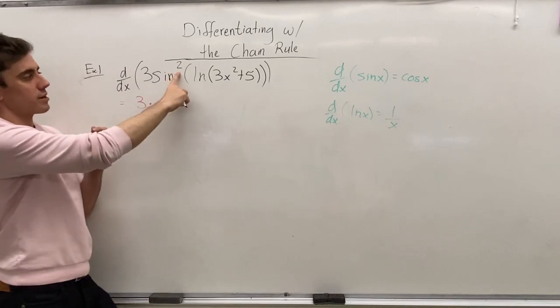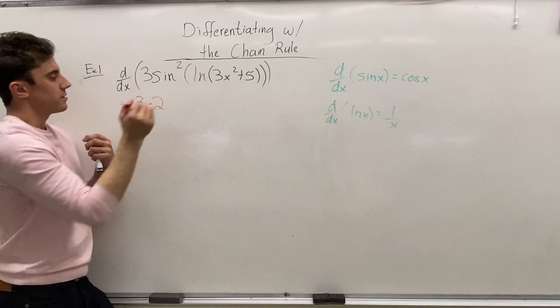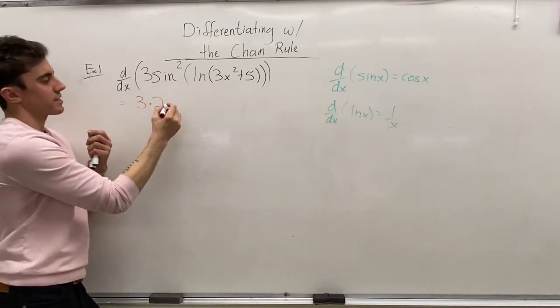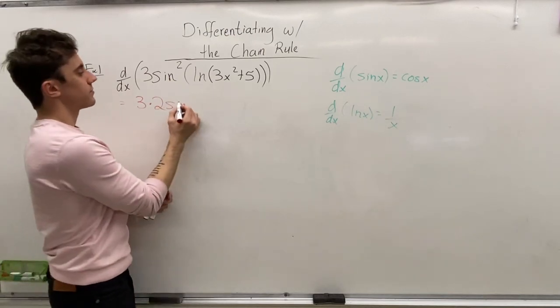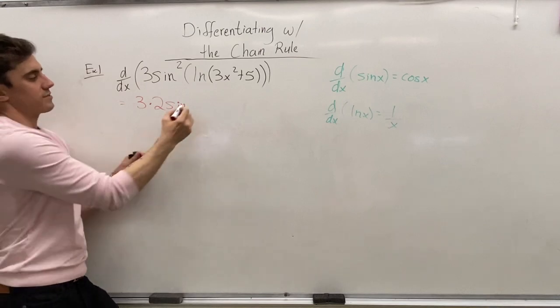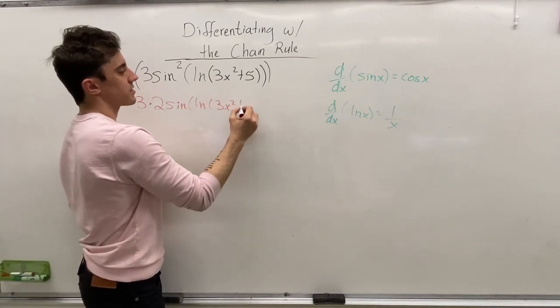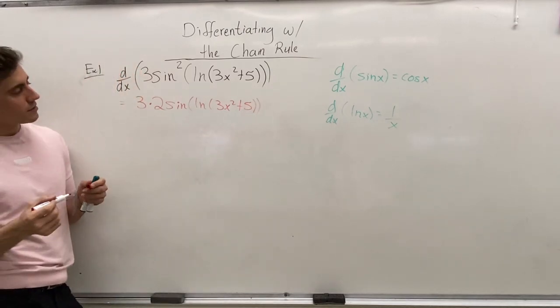So, differentiating sine squared means the 2 in the exponent is going to drop down and multiply the coefficient, and then it's going to drop down by 1. So, the 2 is going to go down to 1, and so we're just going to have sine to the power of 1, which we know is just sine. So, now we simply have sine of the ln of 3x squared plus 5, making sure our brackets are well written.